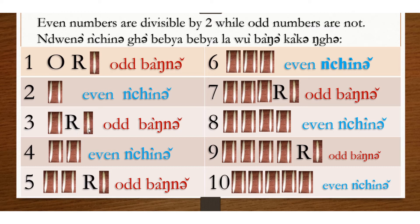3 is not divisible by 2, so it is odd. When you divide 3 by 2, you have a remainder of 1, so 3 is odd.